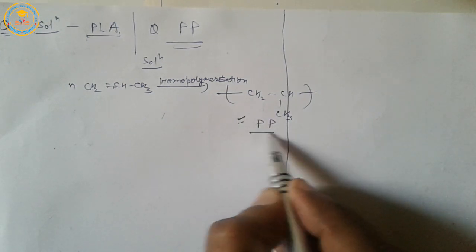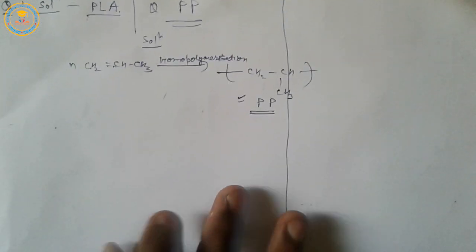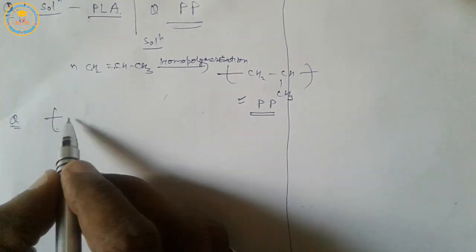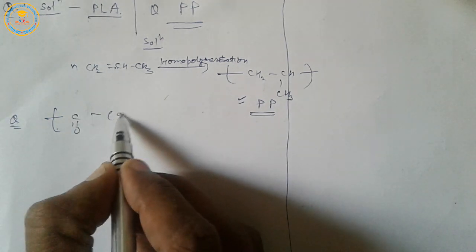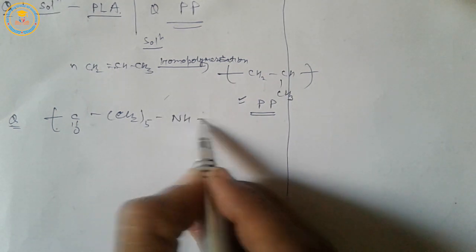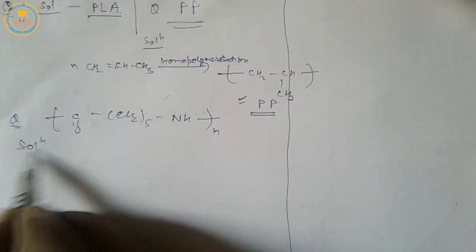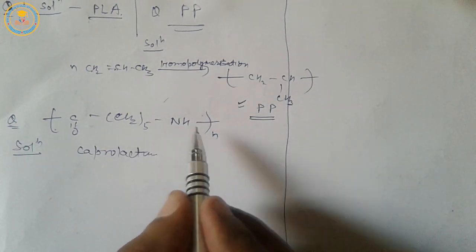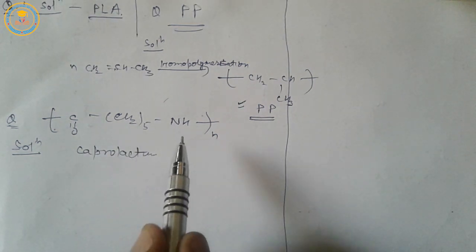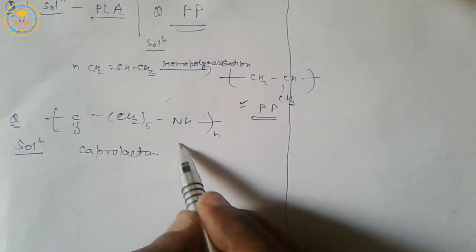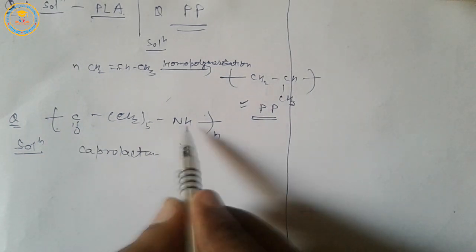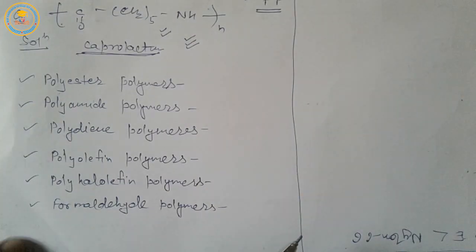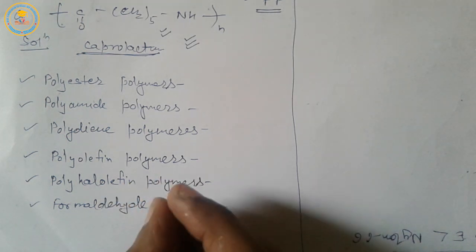The structure of PP is as shown — it is the chemical formula of polypropylene. The next homework question was: give the name of the monomer in the following polymer, whose structure is given in the question. The solution is caprolactam. It is the chemical formula of Nylon 6; Nylon 6 has caprolactam as its monomer. I hope your answers are right.